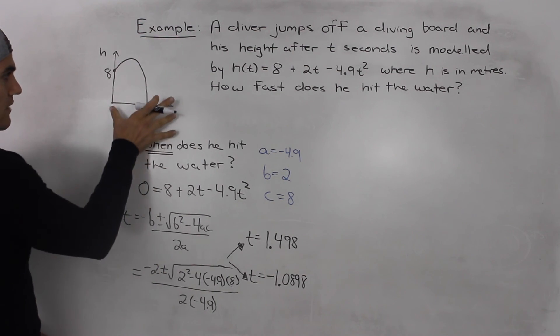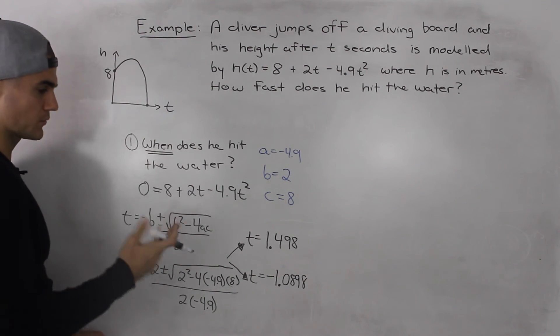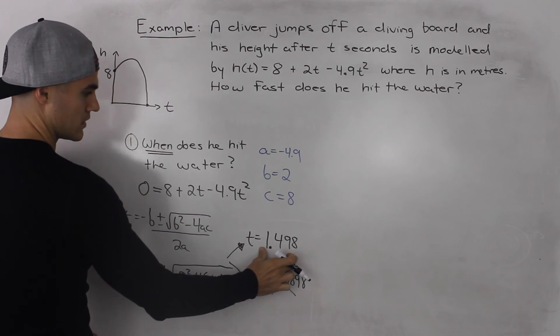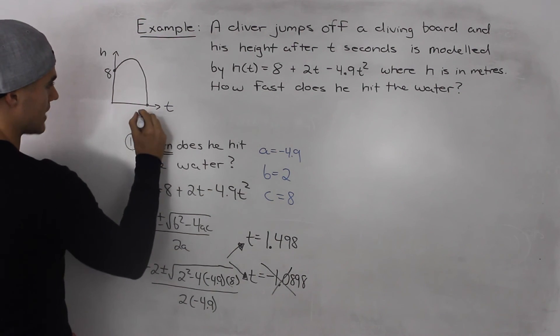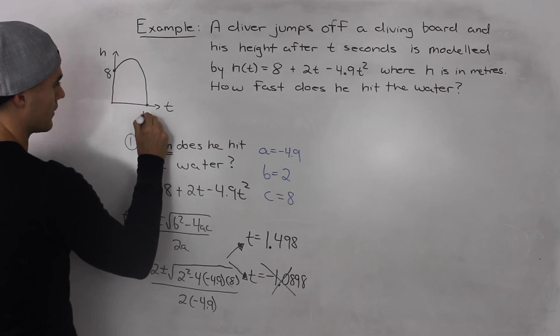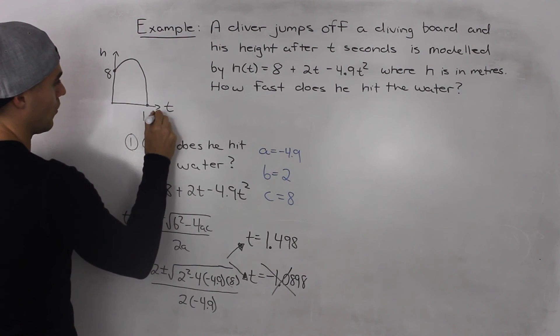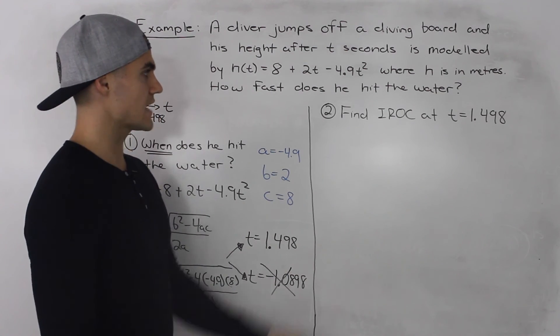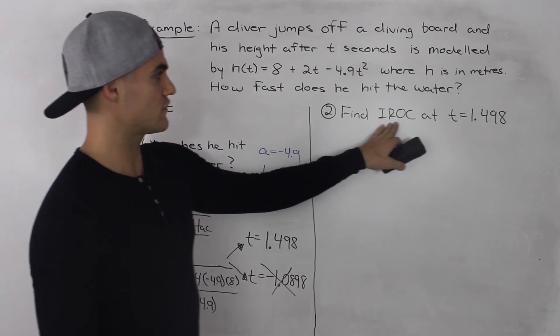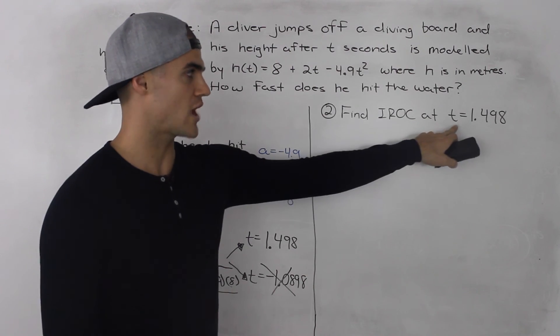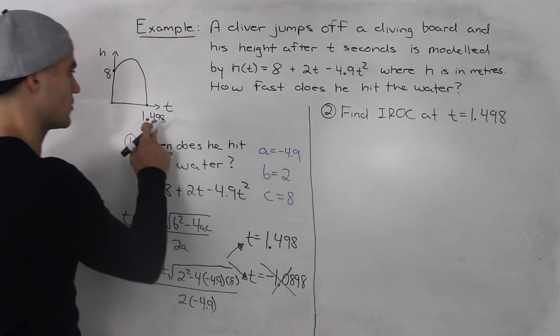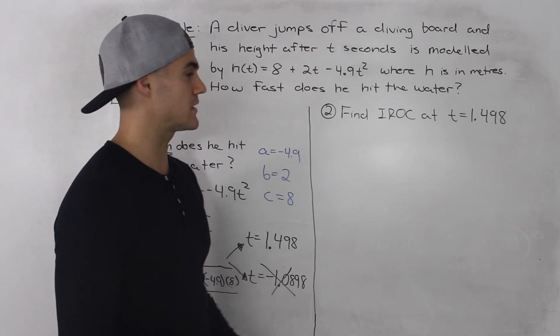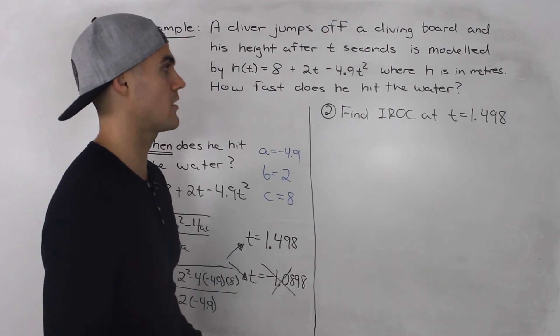But since we have a word problem that we're dealing with, time can't be negative. So we would just ignore that answer. So we know that the diver is hitting the water at 1.498 seconds. And then the second step is we just have to find now the instantaneous rate of change at that time, at t equals 1.498. So this just becomes an instantaneous rate of change problem now.